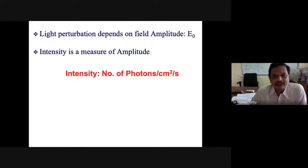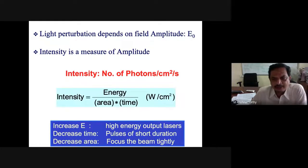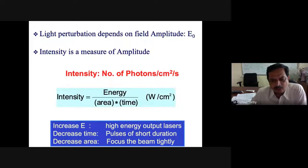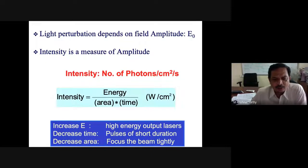The most important parameter in this research is the electric field amplitude E0, measured as intensity — number of photons per square centimeter per second, or energy delivered per unit area per unit time. This is crucially important because the physics studied changes dramatically with intensity. Since light is a coherent stream of photons, you can focus it down to the wavelength limit, with no limit on how many photons per unit time can be packed.